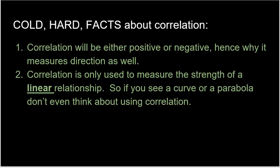Let's talk about some cold, hard facts about correlation. First, correlation can be positive or negative — that's how it measures direction. A negative correlation is not bad; it simply means your data is going down from left to right. If your correlation is positive, it tells you that your data is going up from left to right. And I mentioned this already but it's worth repeating: correlation is only used to measure the strength of a linear relationship. So if you see a curve or a parabola, don't even think about using correlation.